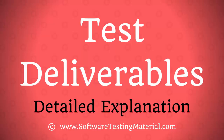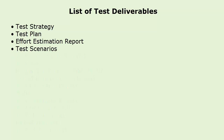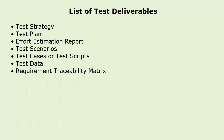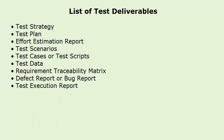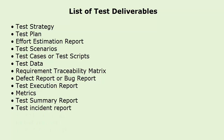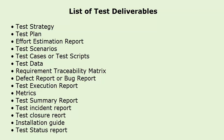The list of test deliverables includes: test strategy, test plan, effort estimation report, test scenarios, test cases or test scripts, test data, requirement traceability matrix, defect report or bug report, test execution report, metrics, test summary report, test incident report, test closure report, installation guide, and test status report. Let's see all the mentioned deliverables one by one in detail.